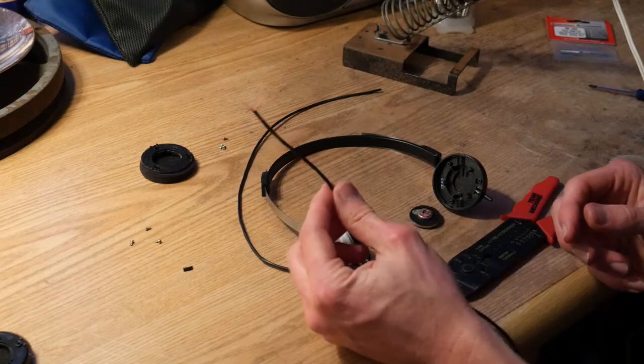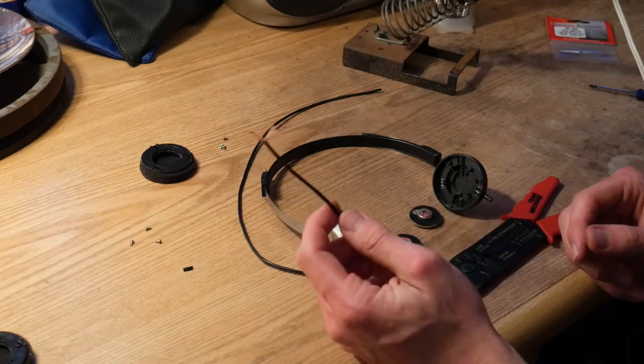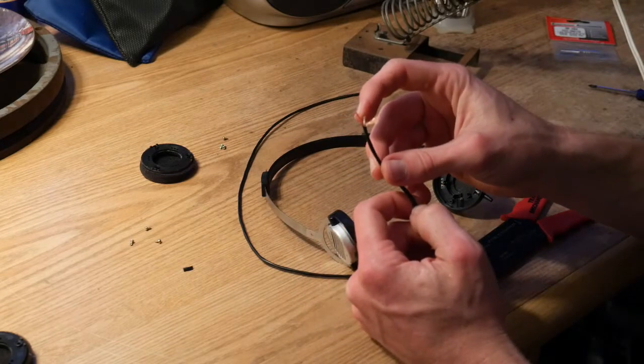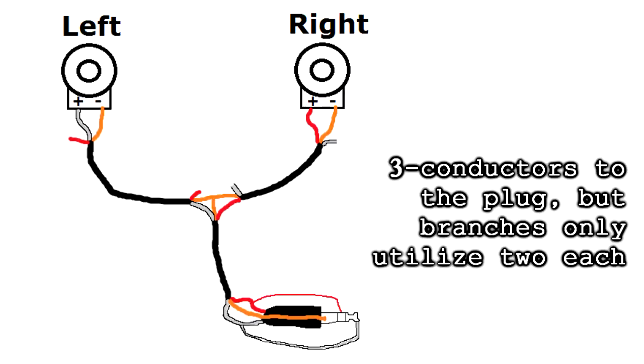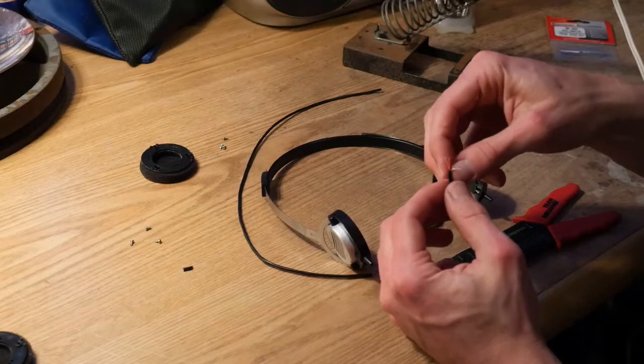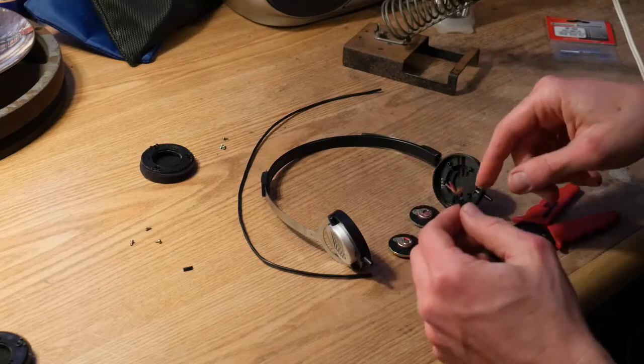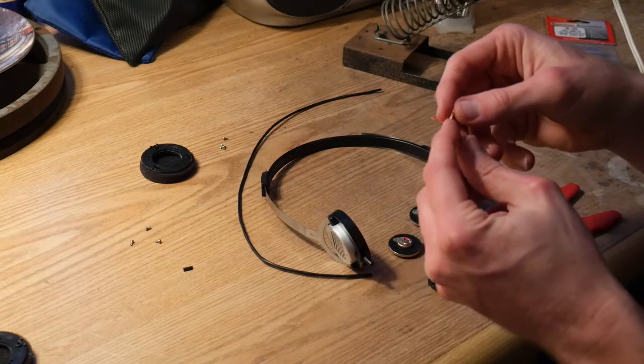Now given that this is a three conductor cable and we only need two conductors, I'm just gonna chop off the respective one for the ones that I need. So for the right one I'll just use the red, the left one let's use the white, and the shielding is probably way too much to solder on so I'll trim that down also.